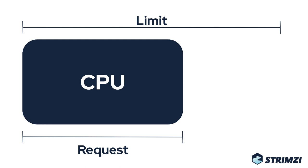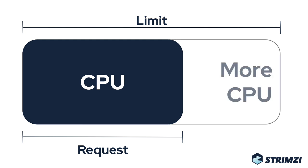So how do the resource requests and limits play with Kafka? With CPU, it is relatively straightforward. The requested CPU should always be available, but the CPU up to the limit might or might not be there. If it is available, Kafka will be able to use it or give it back without any special configuration or handling. So there is no problem with using the limits with Kafka for CPU.